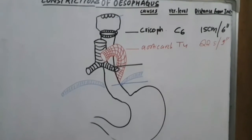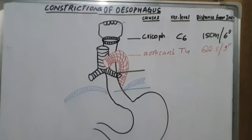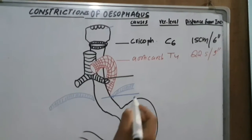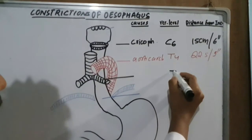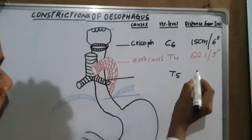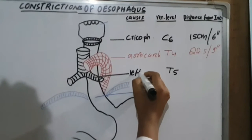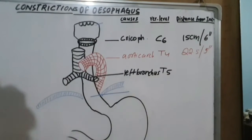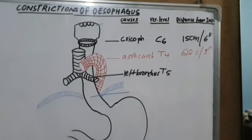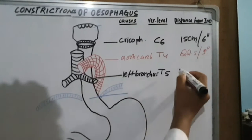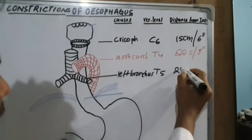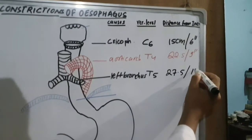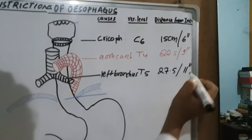The third constriction is where the oesophagus is crossed by the left bronchus, at the level of T5. It is at a distance of 27.5 centimeters, or 11 inches, from the upper incisors.